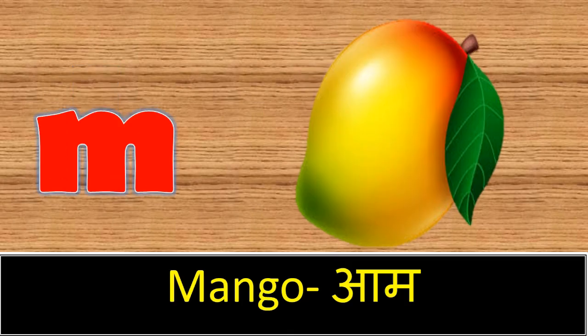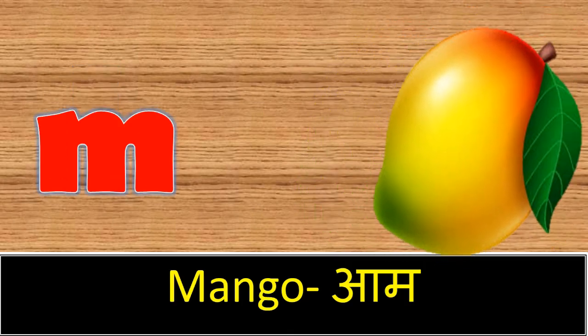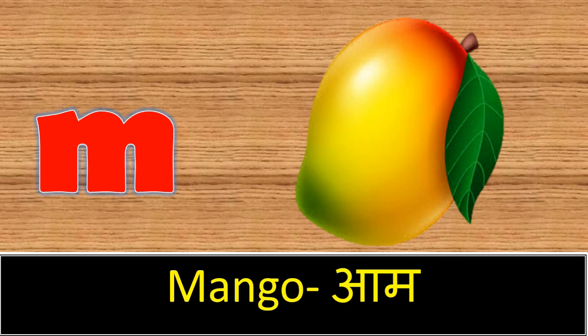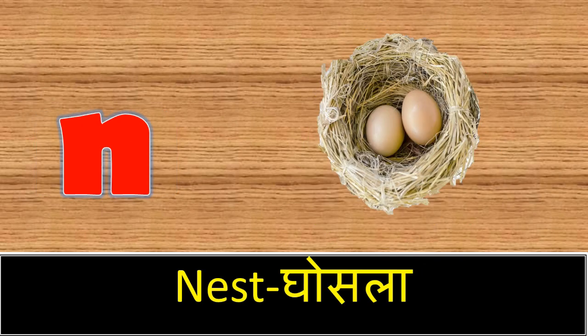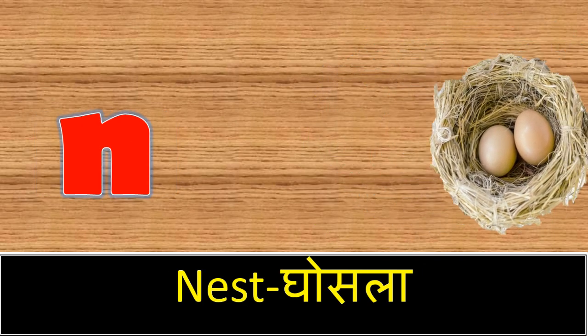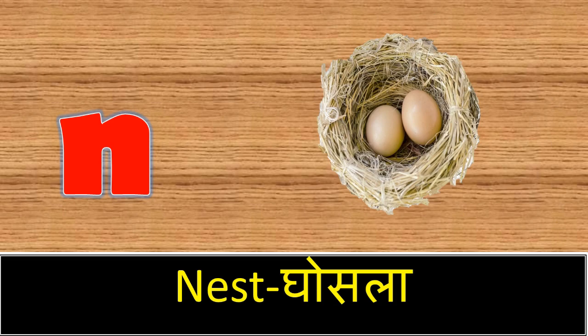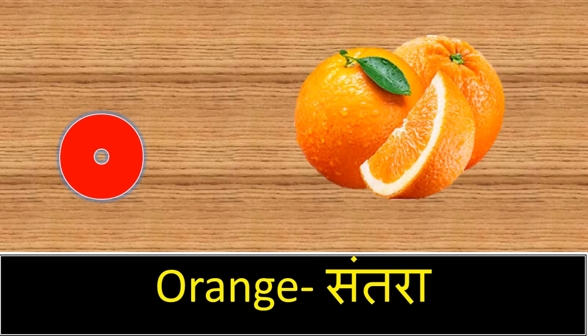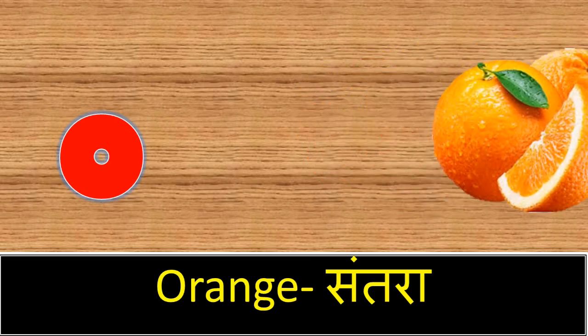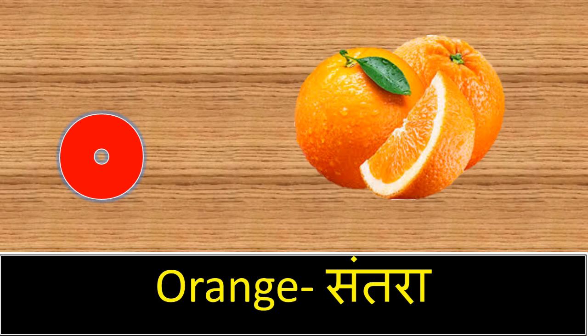M. M for mango. Mango means arm. N. N for nest. Nest means ghosla. O. O for orange. Orange means santra.